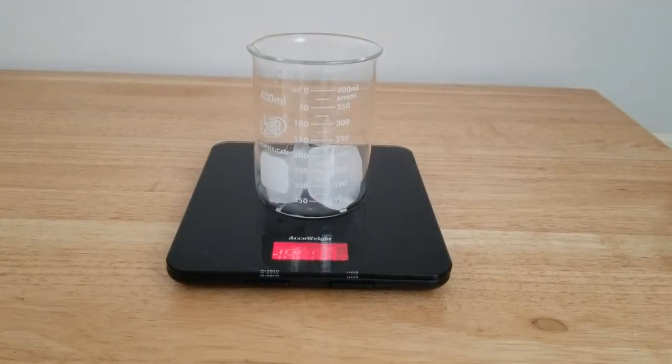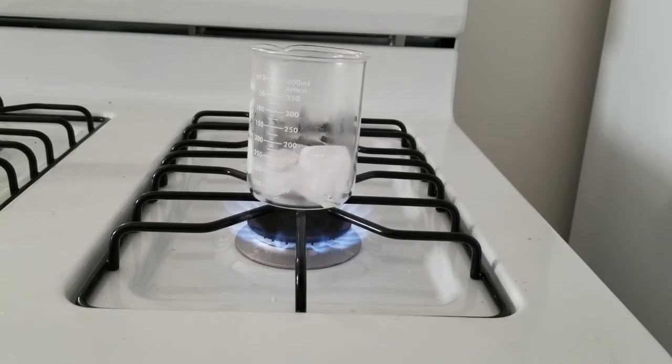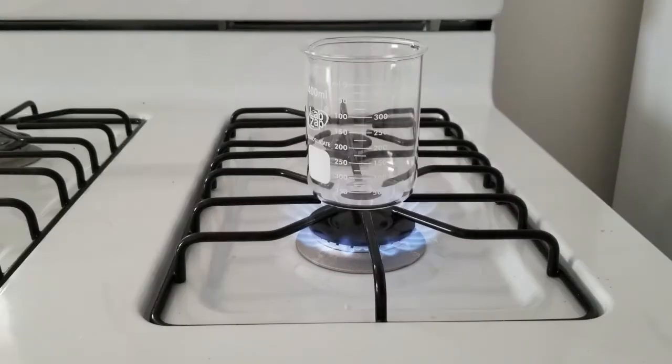We have a beaker that is filled with 0.069 kilograms of ice. We want to find out how much heat energy in joules it will take to turn the ice with initial temperature of negative 5 degrees Celsius into steam at 110 degrees Celsius.